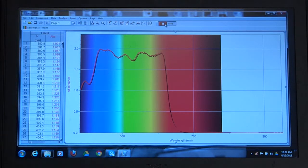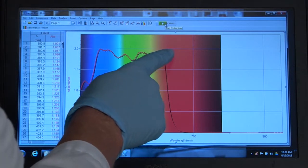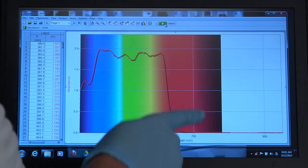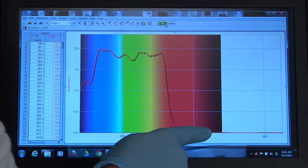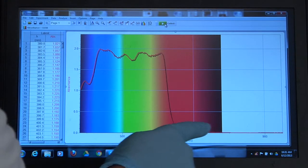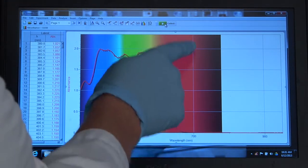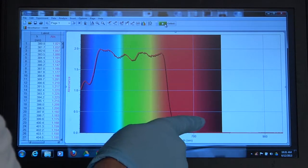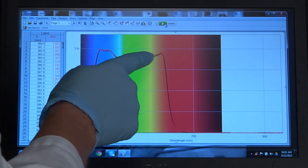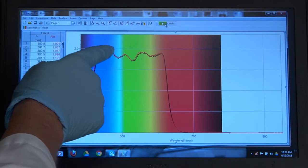And what you can see is none of it is being absorbed. So that means all of the red is being transmitted. Yellow, green, and blues are being absorbed.